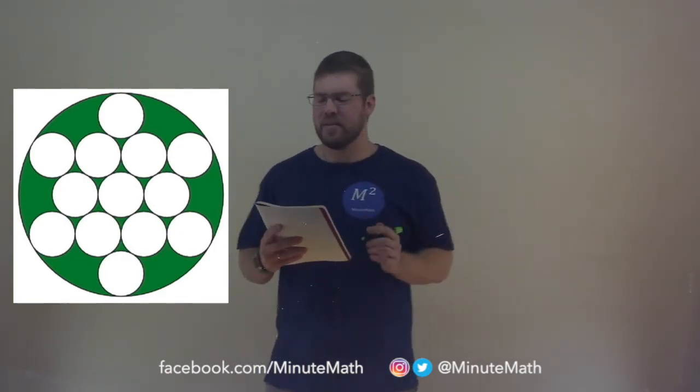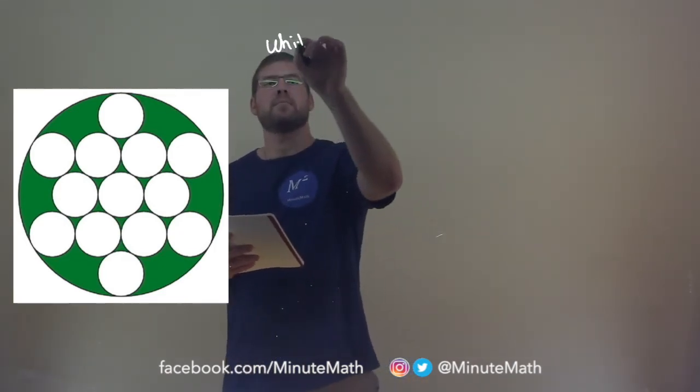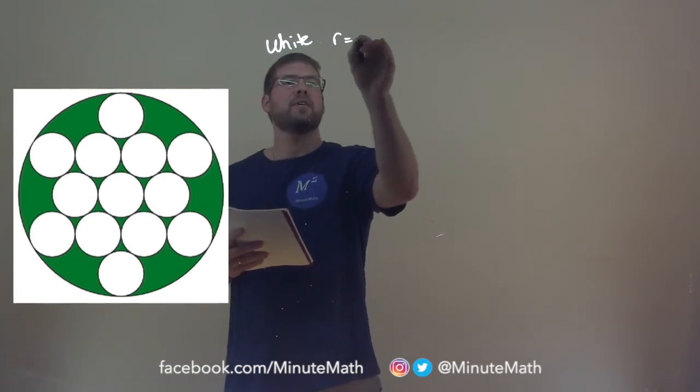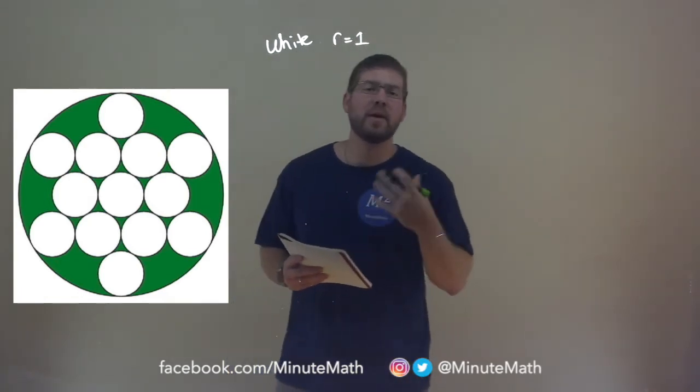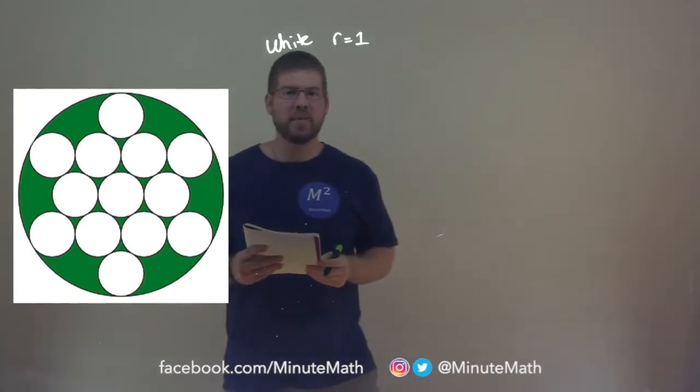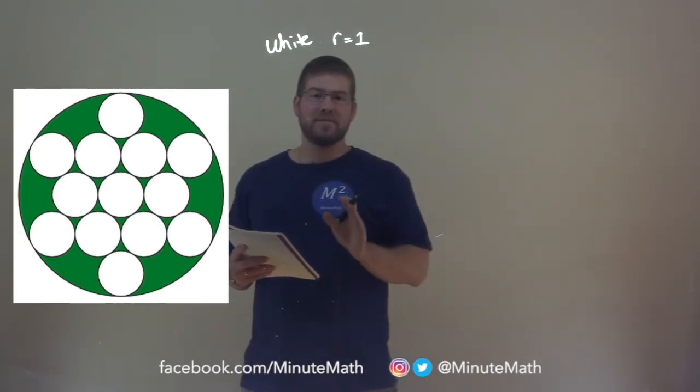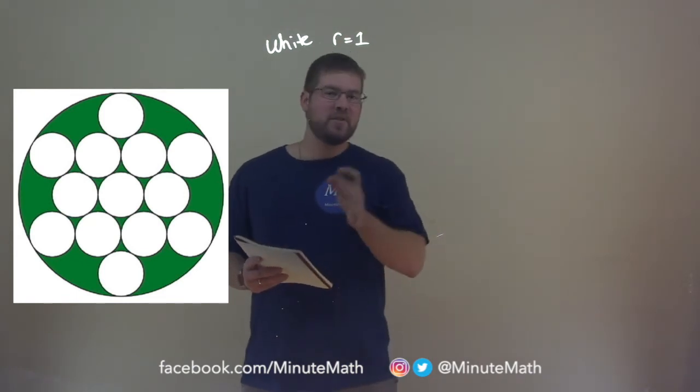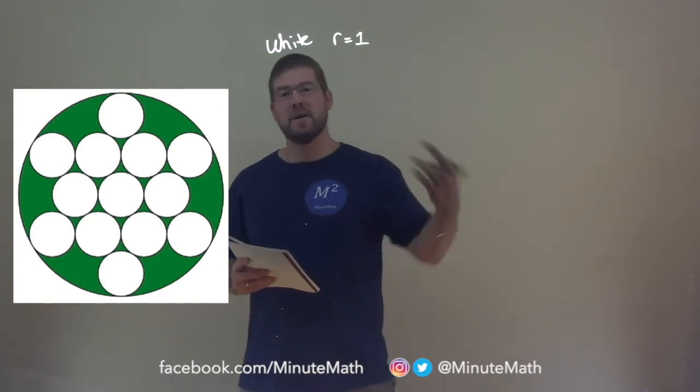We are going to assume that the white circle has a radius of one unit. So it has a radius of one unit and that's all we need to know to solve this problem. If you think you can figure it out just pause this video right now see if you can get an answer and then see if it matches up with our answer.